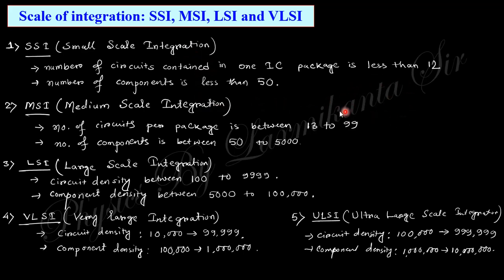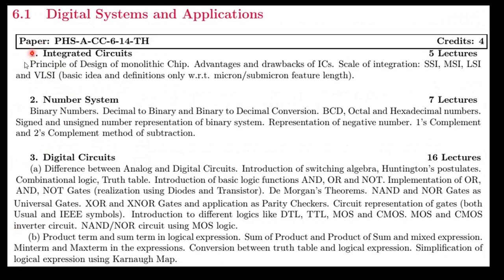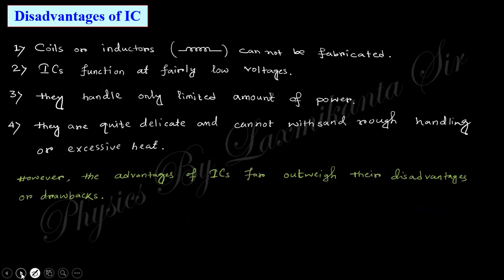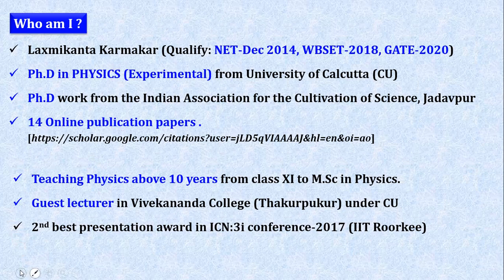Within a package or IC, the number of circuits or components determines its classification. We have covered this first portion of the syllabus — principle of design of monolithic chip, advantages, drawbacks, and scale of integration. In the upcoming session, we will continue with the next portion. If you have any doubt, please comment in the comment box.